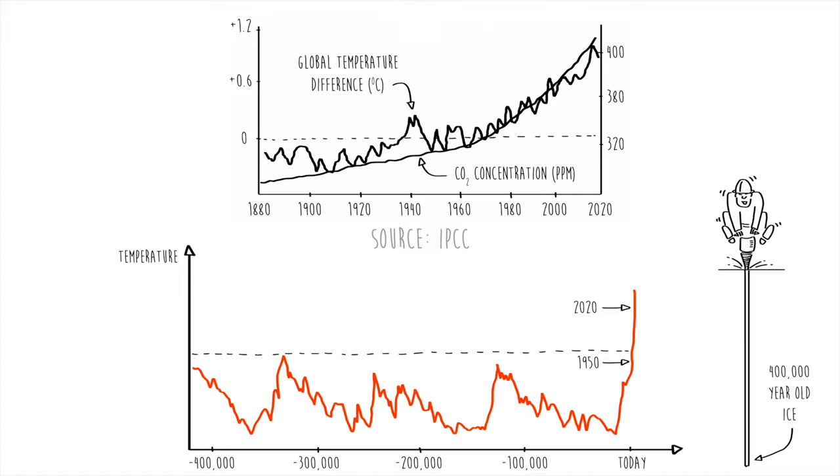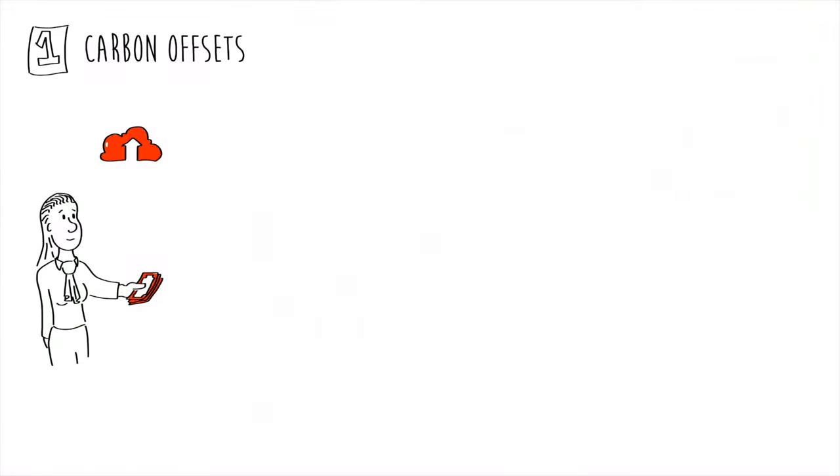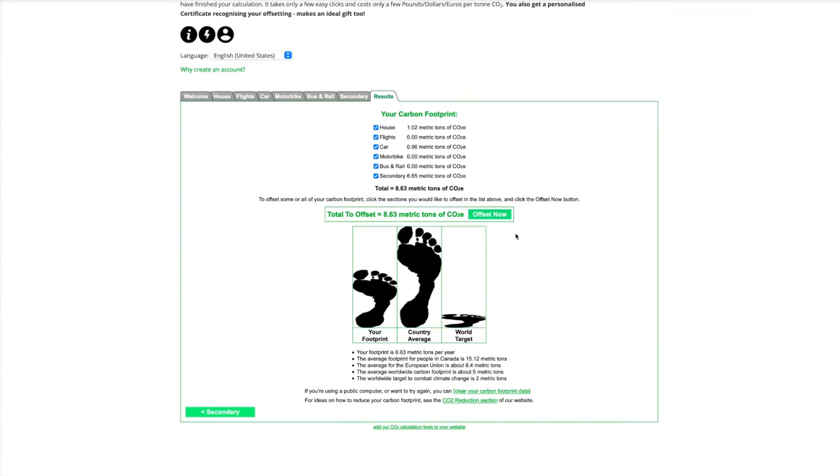So we need to reduce our emissions, which means we need to reduce our carbon footprint. How do we do that? One option is carbon offsets. This means paying a certain amount of money, depending on your emissions, that will go towards a program designed to reduce the same amount of carbon emissions somewhere else in the world, either by planting trees, building a wind farm, a solar power plant, etc. When you calculate your carbon footprint, some calculators will give you a link to offset your carbon emissions.